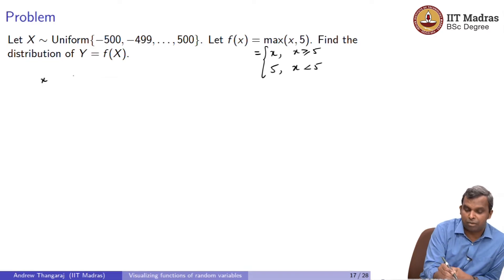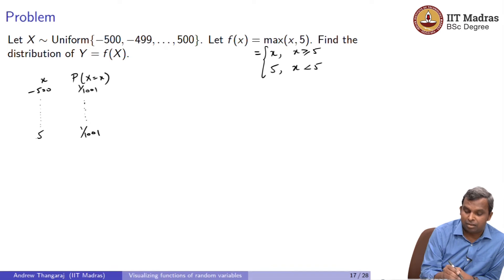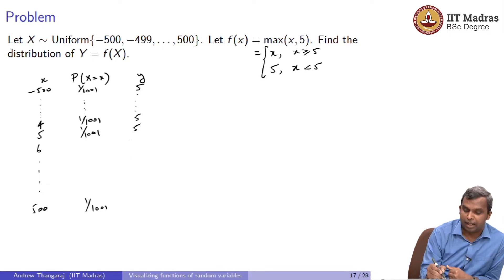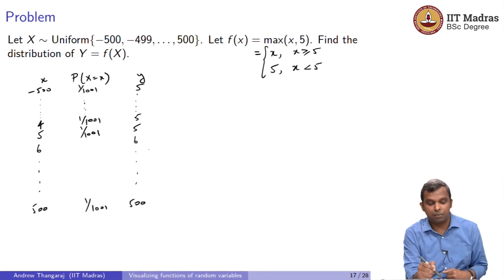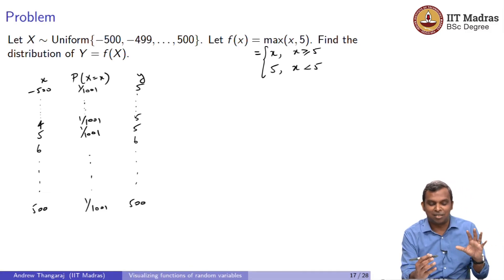I can make the table cleverly and simplify my work. Starting from minus 500, every probability is 1/1001. Using dot-dot-dot notation, I write from minus 500, minus 499, minus 498, and so on, all the way through 4, 5, 6, up to 500 — all with probability 1/1001. The dot-dot-dot helps me write a very large table in terms of a simple pattern.